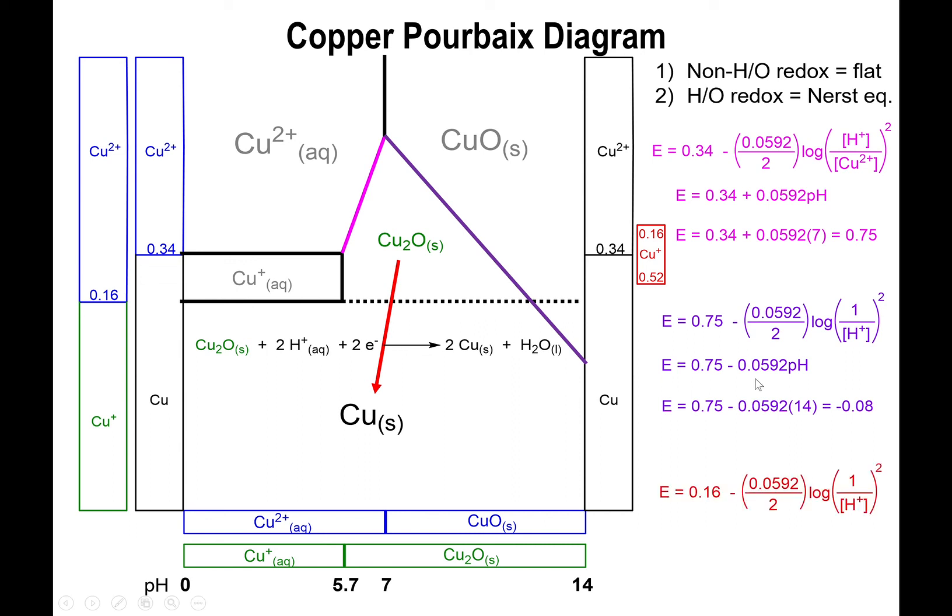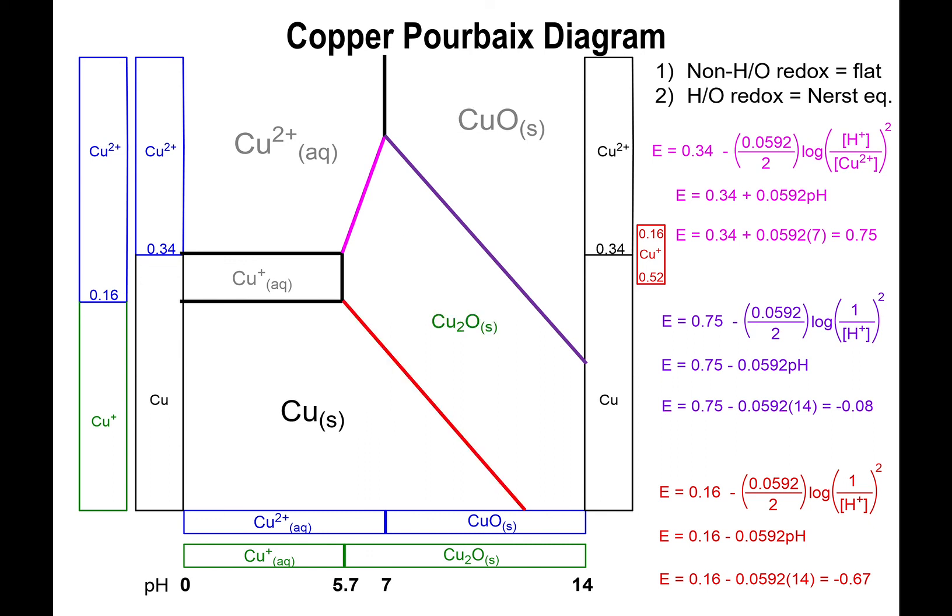So once again, the Nernst equation for this process will have H-plus to the second power on the denominator. This involves two electrons, so the value of n is 2. If you bring the exponent in front of the log, 2 and 2 will cancel out. You'll end up with log of 1 over H-plus, which is simply the pH. So ultimately, this equation simplifies to 0.16 minus 0.0592 times the pH. And once again, we plug in pH of 14 to figure out what the value is. In this case, the value goes down to negative 0.67. So starting from the boundary of copper 1 to copper 0, we draw a line that goes down up to negative 0.67 with a slope of negative 0.0592.